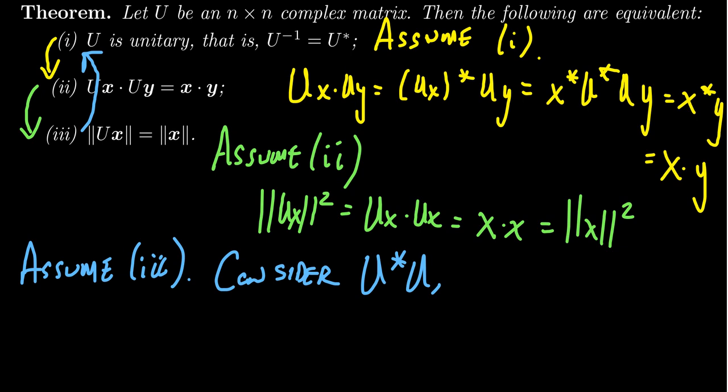But what we do know is that U star U, irrelevant of what U is, U star U is Hermitian. It's a Hermitian matrix. A Hermitian matrix is the complex equivalent of a symmetric matrix. A Hermitian matrix means that if you take the matrix and you take its conjugate transpose, you get back the original matrix as well. Why does that matter?